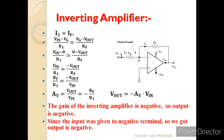I1 is equal to IF. Applying nodal analysis: VIN minus VG divided by R1 equals VG minus Vout divided by RF. Where VG is virtual ground, so VG equals 0. Therefore VIN minus 0 divided by R1 equals 0 minus Vout divided by RF. So VIN by R1 equals minus Vout by RF. Rearranging: Vout by VIN equals minus RF by R1, which is the gain expression. The gain is minus RF by R1, or Vout equals minus AV into VIN. This is the output expression for the inverting amplifier.